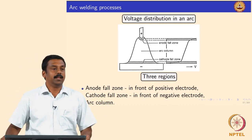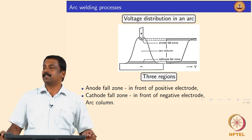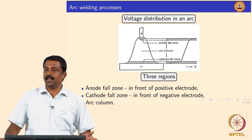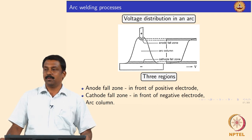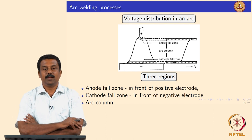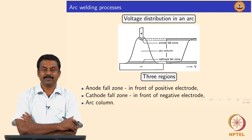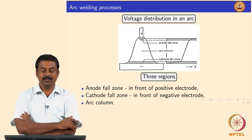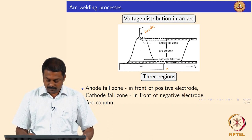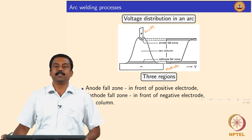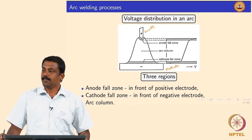To understand how the heat is generated, we need to look at the components inside the arc. You can make either the electrode positive or negative — whether you want to melt the electrode or keep it safe for a long time. Assuming the electrode is positive and the workpiece is negative, the workpiece is the cathode and the electrode is the anode. Electrons are generated in the cathode and travel toward the anode.